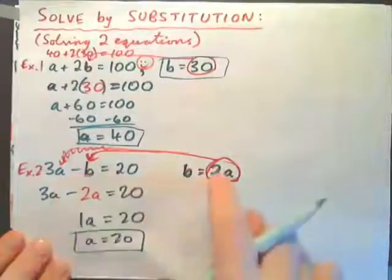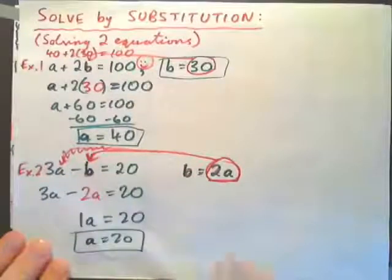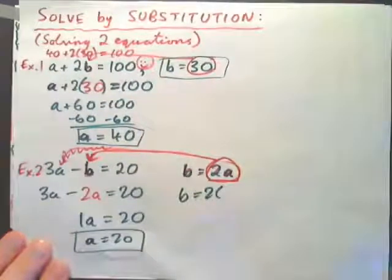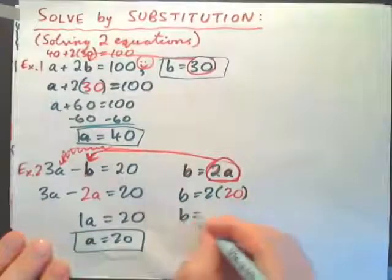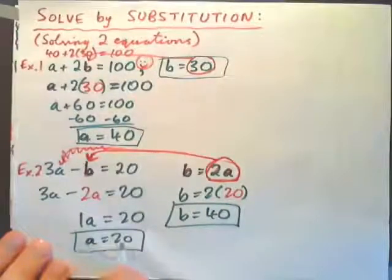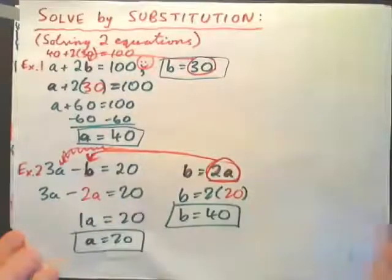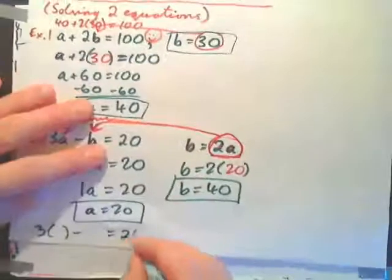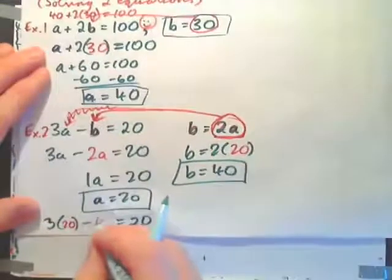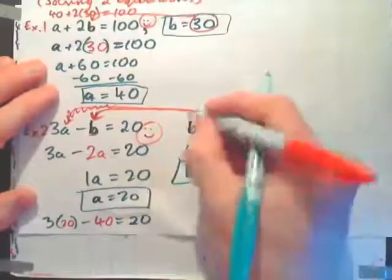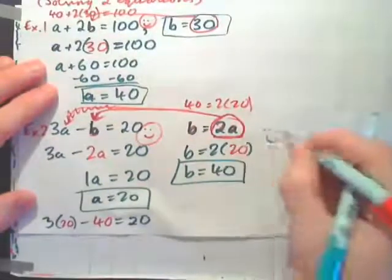We have two equations and two unknowns, a and b, so we need to find both. We found a, so now find b. The simplest thing is to plug 20 into b equals 2a: b equals 2 times 20, so b equals 40. Apple is 20 cents, banana is 40 cents. We can verify: 3 times 20 minus 40 equals 60 minus 40 equals 20. Both equations are true.